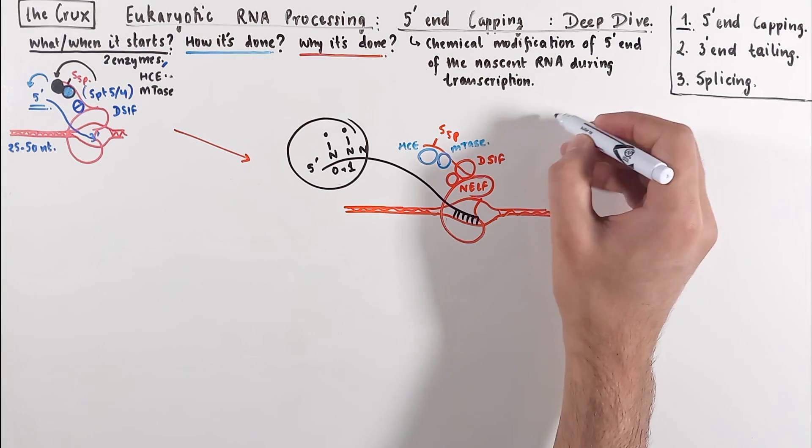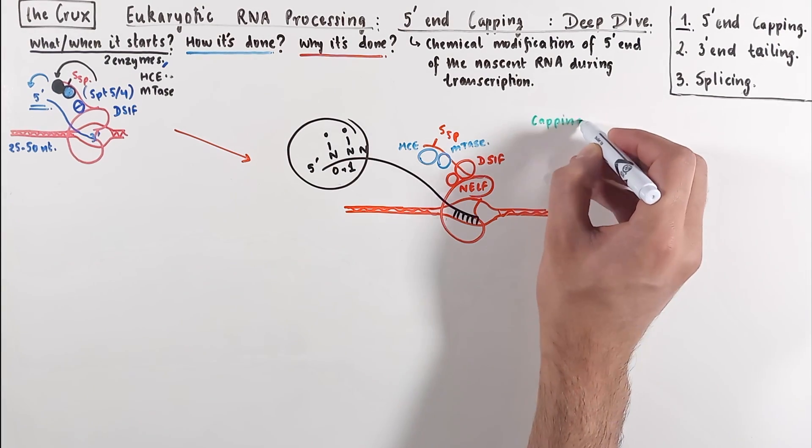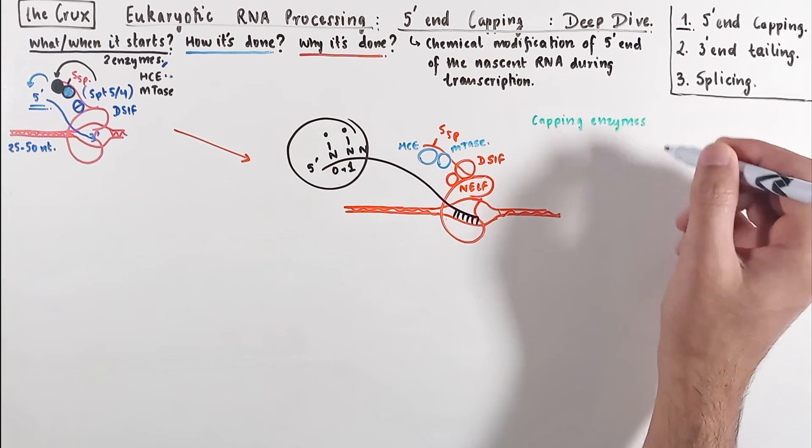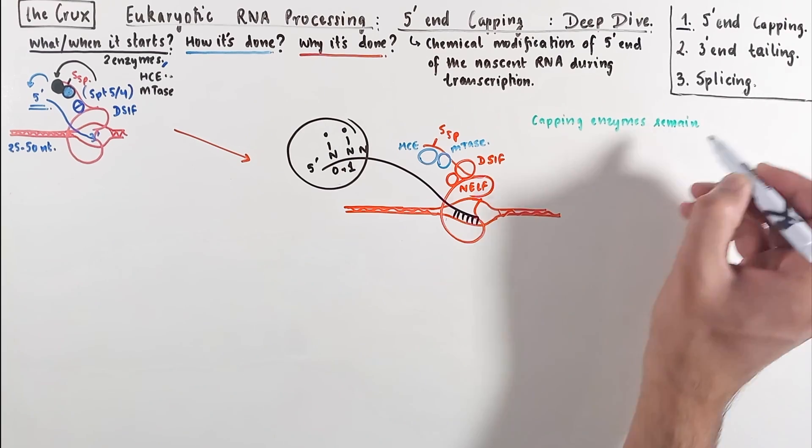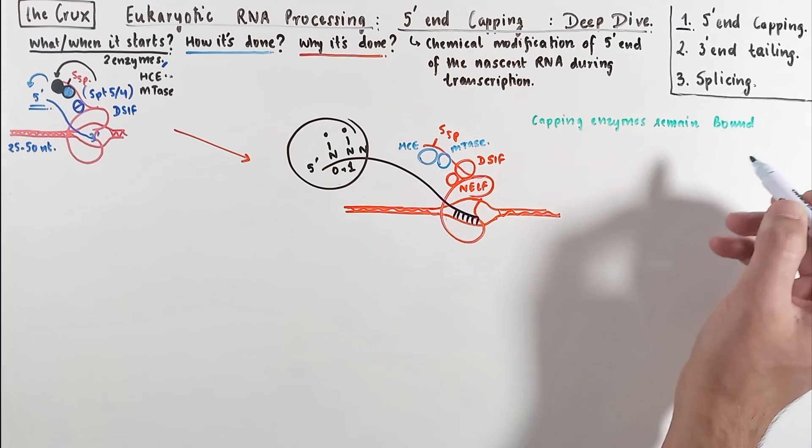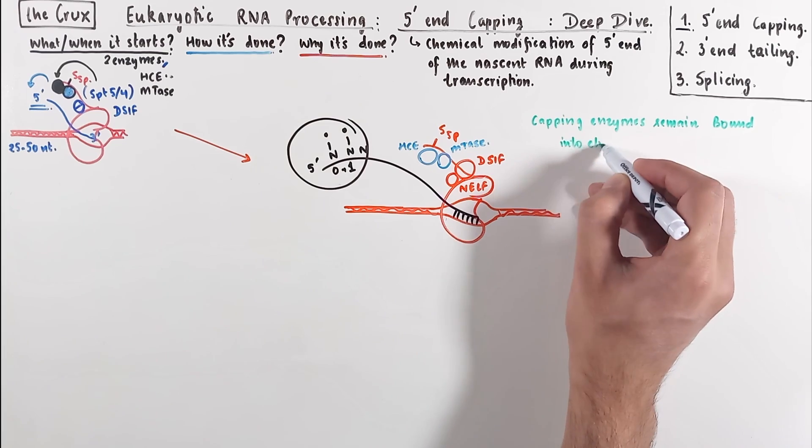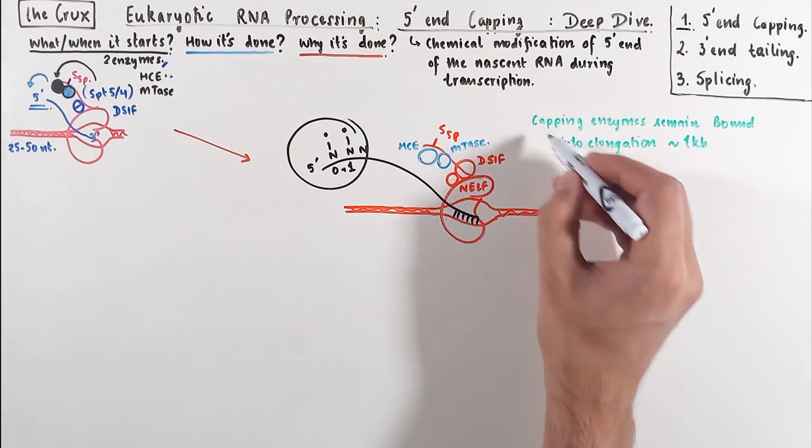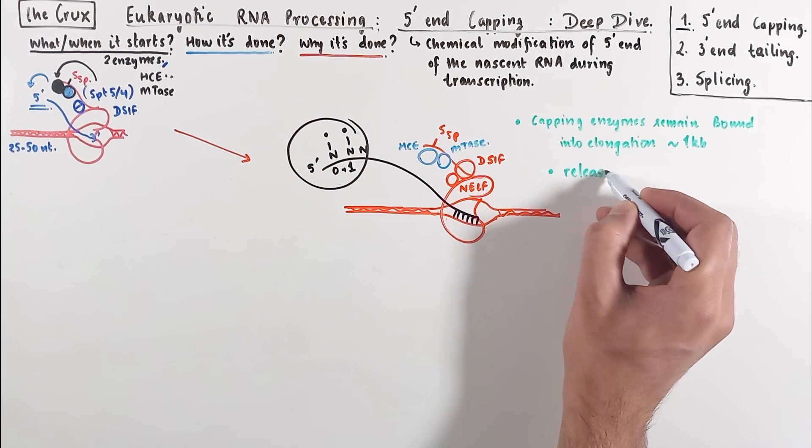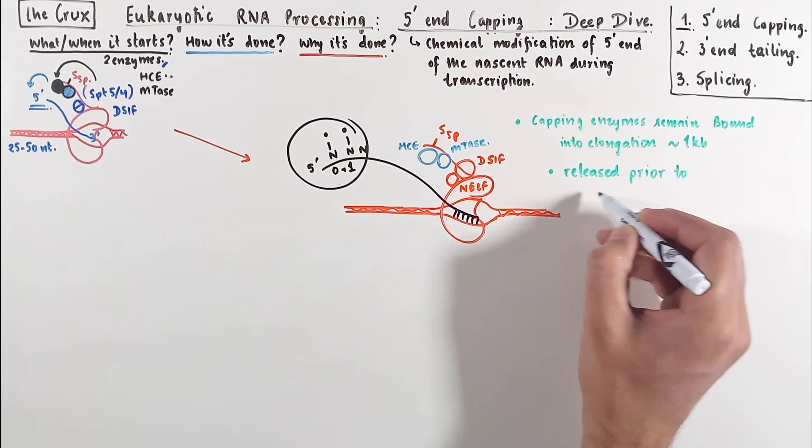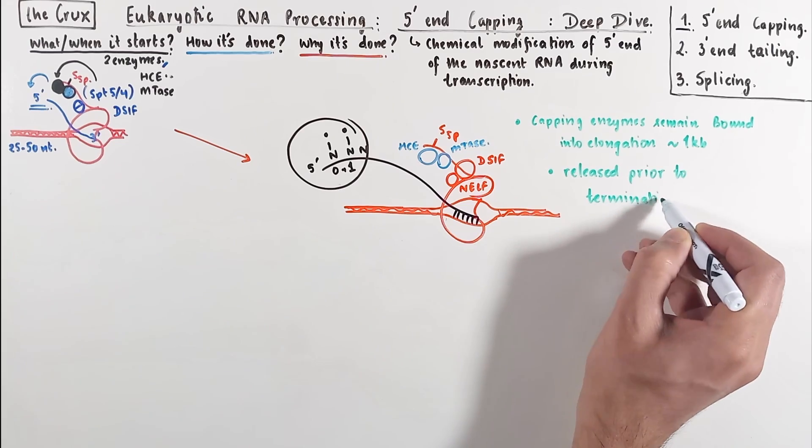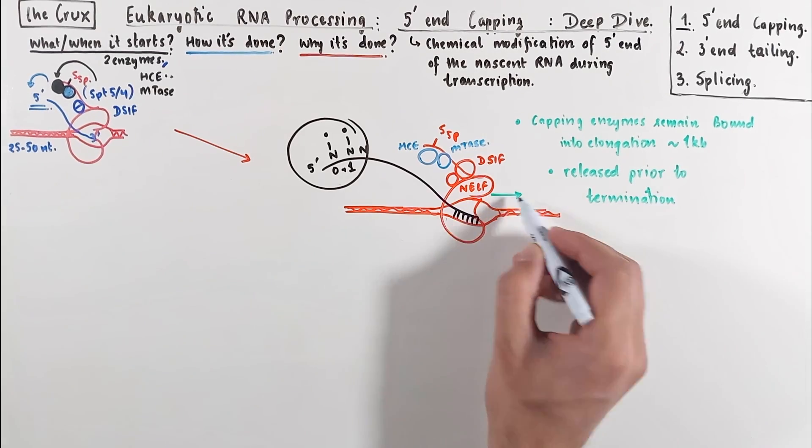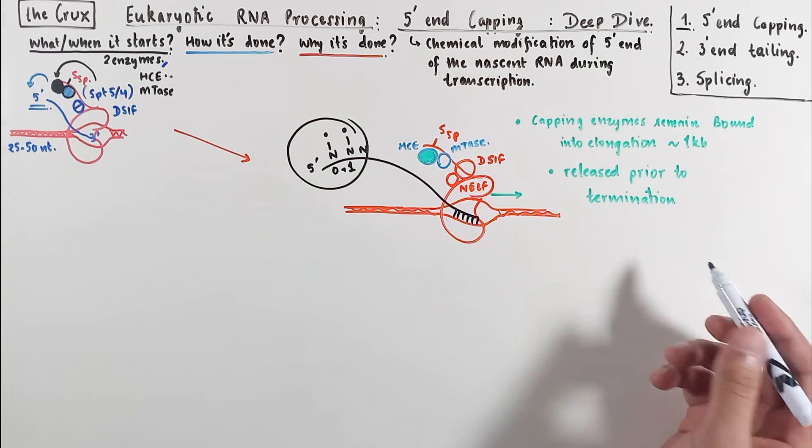Now this cap is maintained by the cell, and the polymerase continues into elongation. But the capping enzymes oftentimes tend to remain bound as the RNA polymerase moves. These enzymes can remain bound for as long as 1 kb. But these capping enzymes must be released from the moving RNA polymerase, especially before termination. The human capping enzyme and the methyltransferase release is very important.